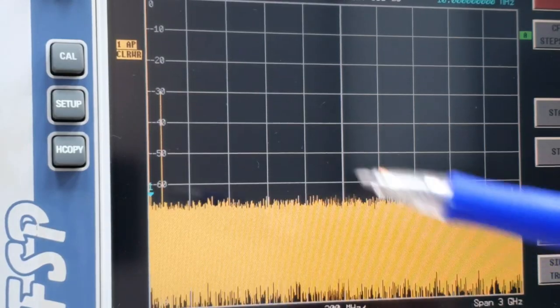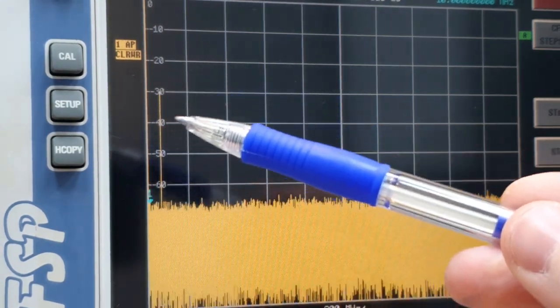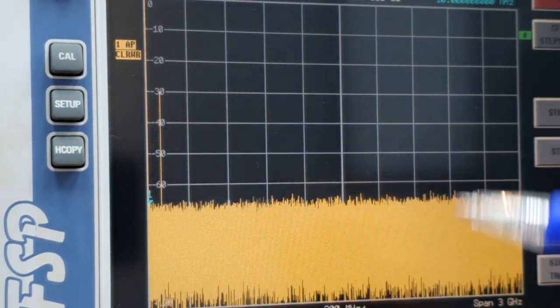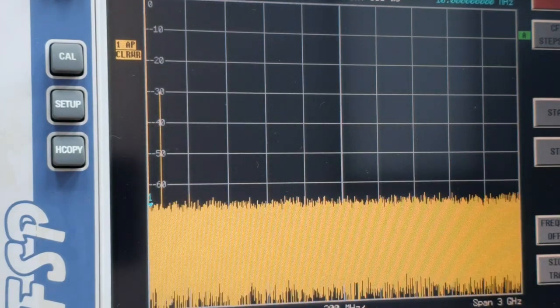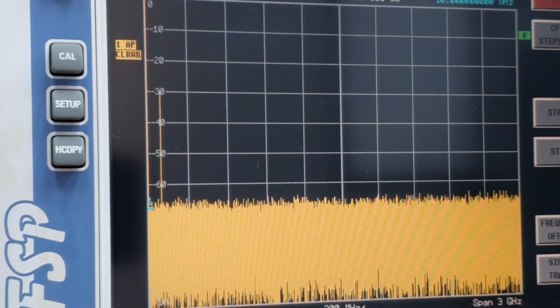So guys, we see the signal here in the spectrum analyzer and it is at negative 30 dB, so we have 20 dB of isolation. Well guys, pretty good for a homemade switch using a BJT transistor.